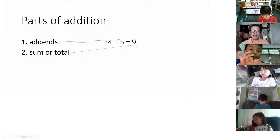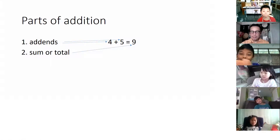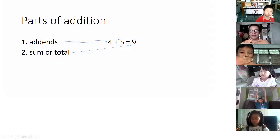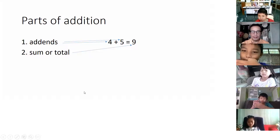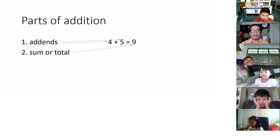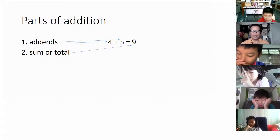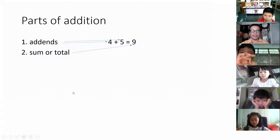The answer after the equality symbol is called the sum. You can also say total. So if the teacher asks: what is the total of three and four? The answer is seven. What is the sum of ten and ninety? The answer is one hundred. What is the total of eleven and one? Your answer should be twelve. These terms are very important.